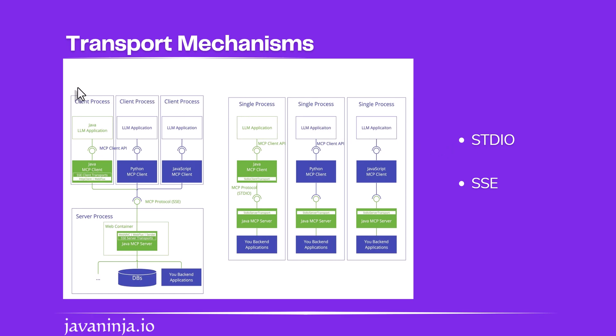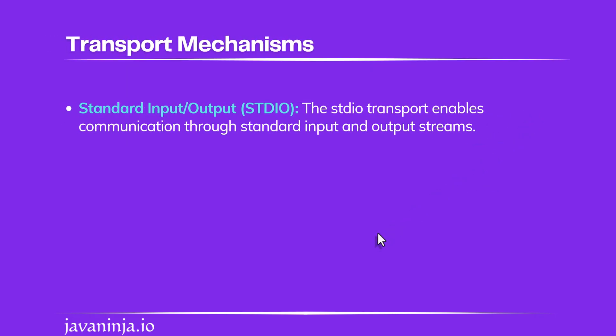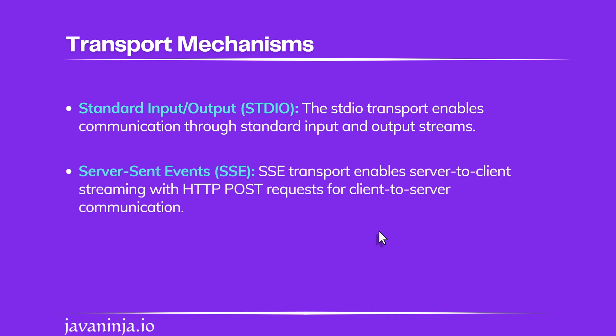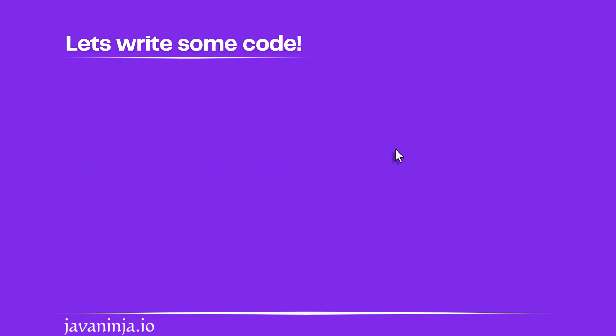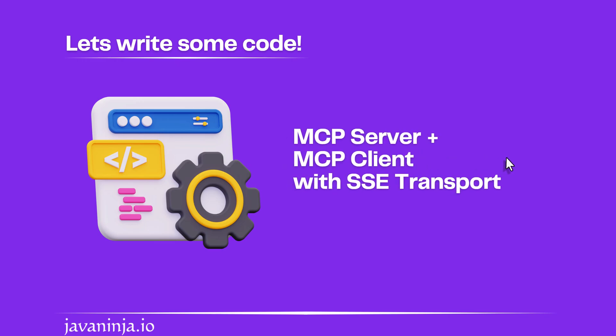In this mode, the MCP server and MCP client both run on different processes. This is the recommended mode when you want to take the MCP server and MCP client to production. Now let's get our hands dirty and create an MCP server with MCP client using SSE transport mode.